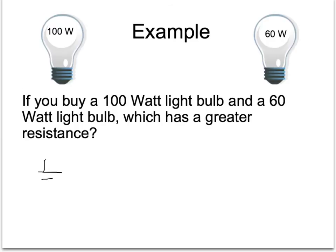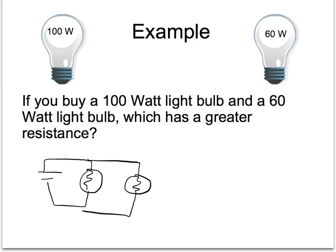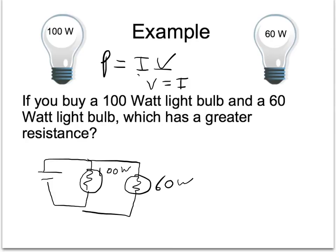Let's think through this with definite math. If you buy a 100-watt and a 60-watt light bulb, which has greater resistance? Since your house is wired in parallel, the voltage is the same everywhere. Using P equals IV, the one with the greater current has the greater power. According to Ohm's Law, if voltage is the same, you must have low resistance to have high current — so the one with high resistance has low power. Therefore, the 100-watt bulb should have less resistance than the 60-watt.